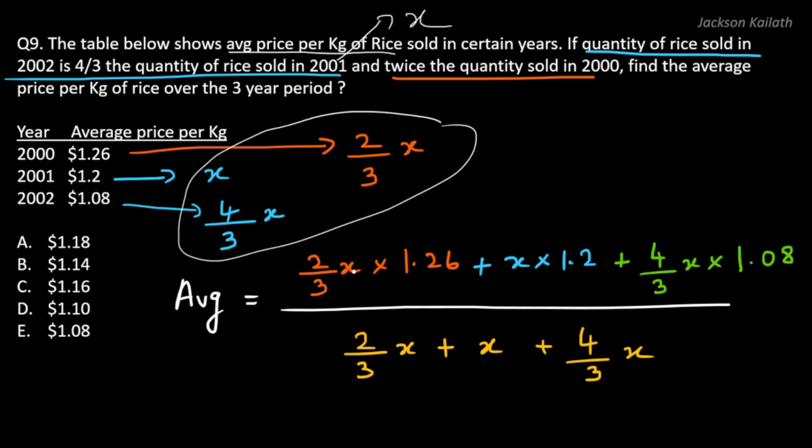Now notice that you have x in every term - in this term you have x, in this term you have x, and in this term you have x, and that's the same case in the denominator as well. So all of these cancel out. That's the beauty of this question. You don't need to know the exact value because we're just finding the average and these x's cancel out, and we're left with just simplifying this expression. Now let's go ahead and do that.